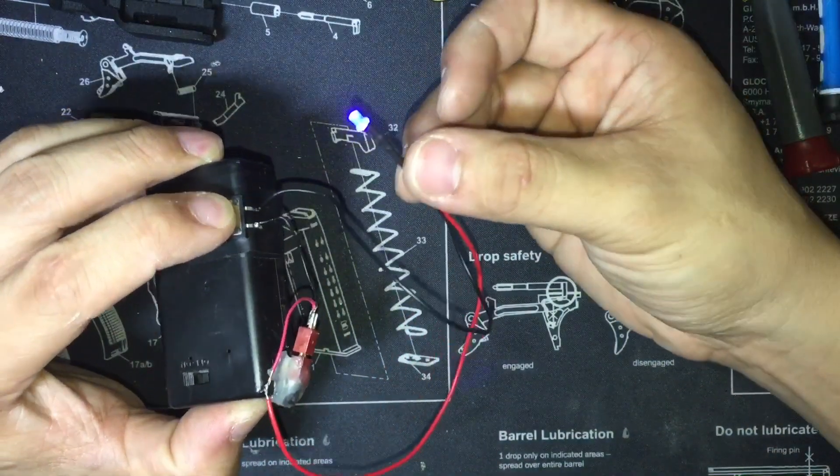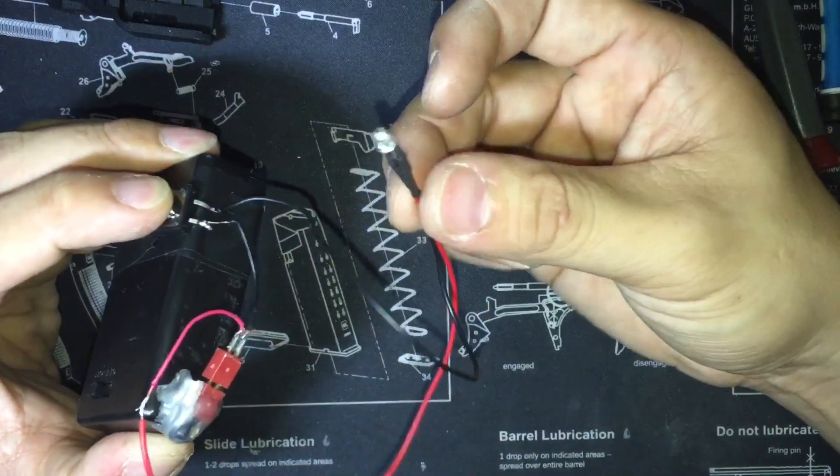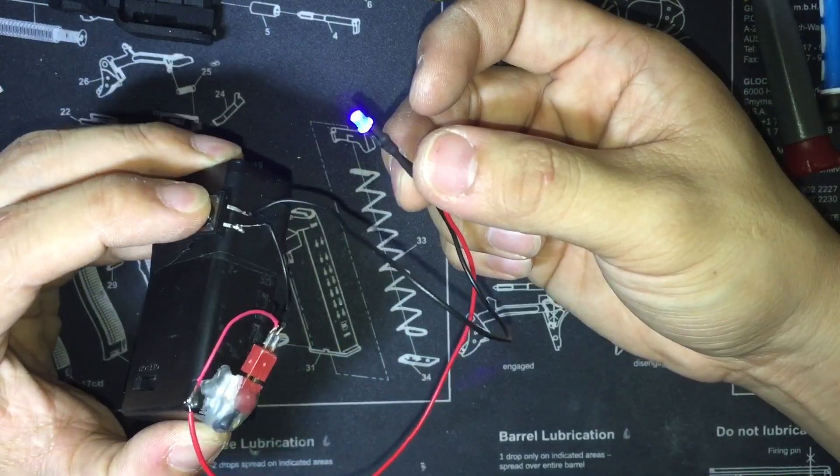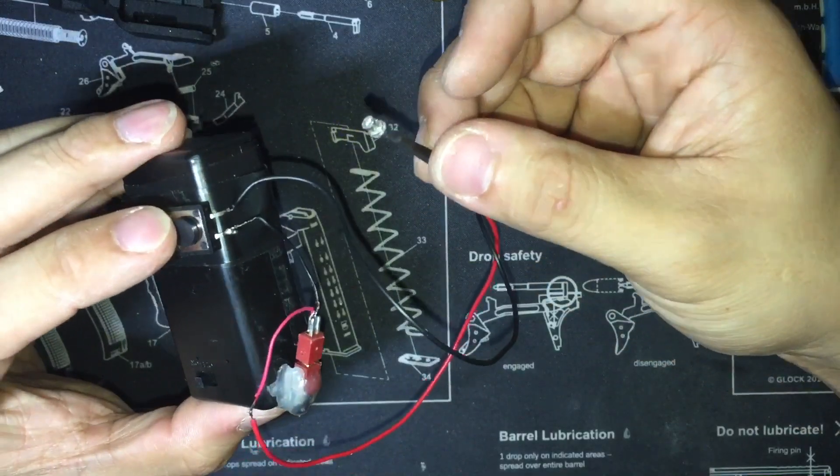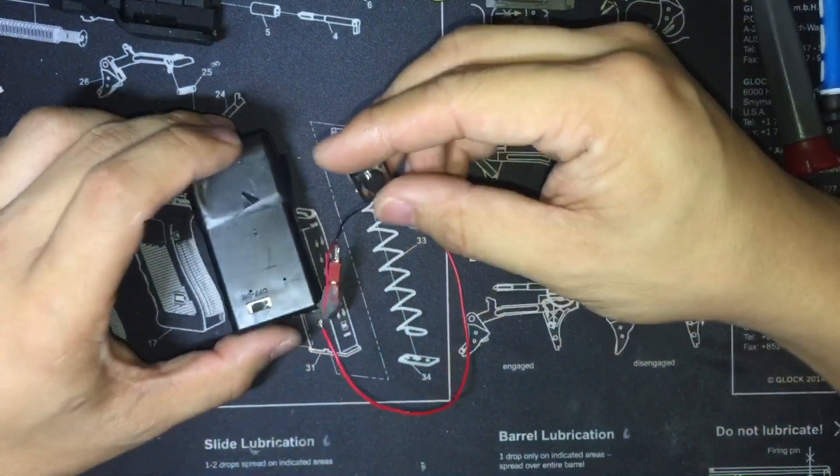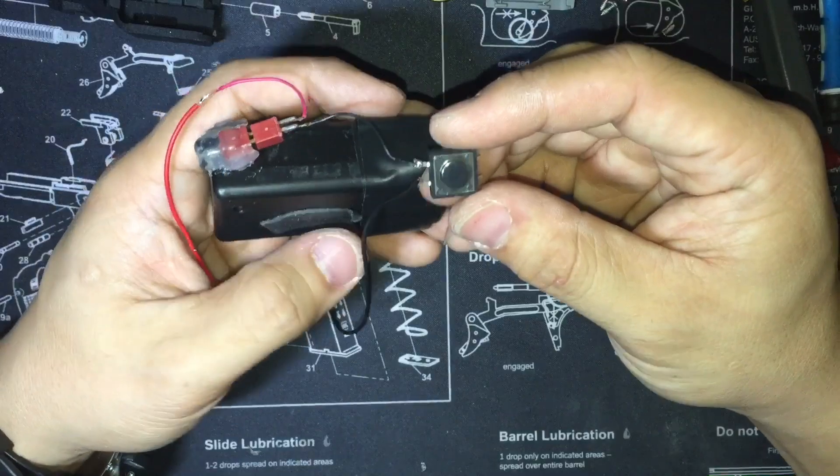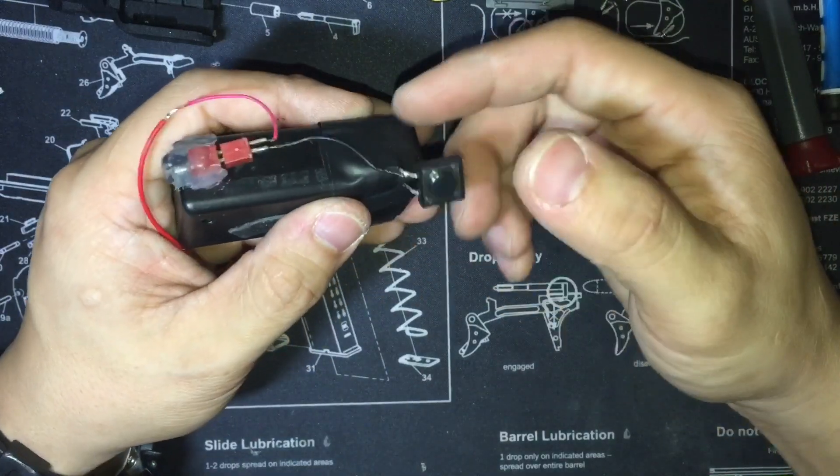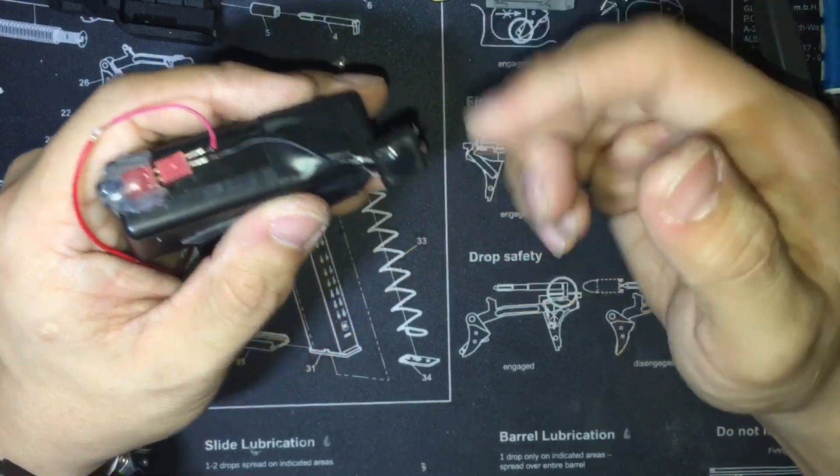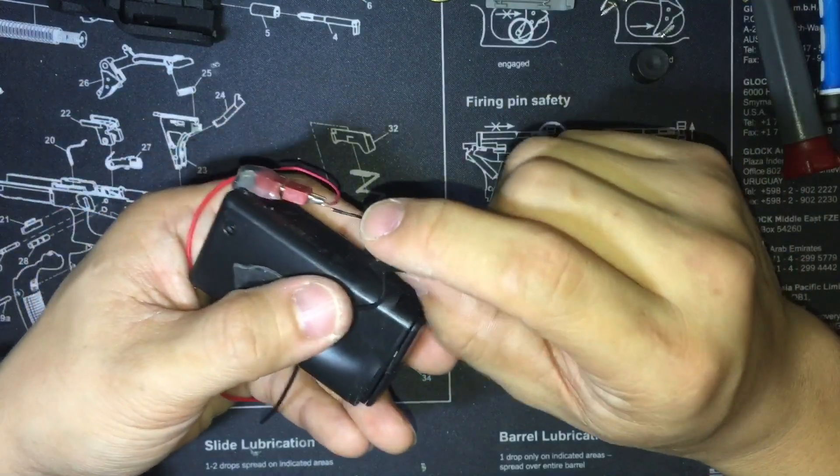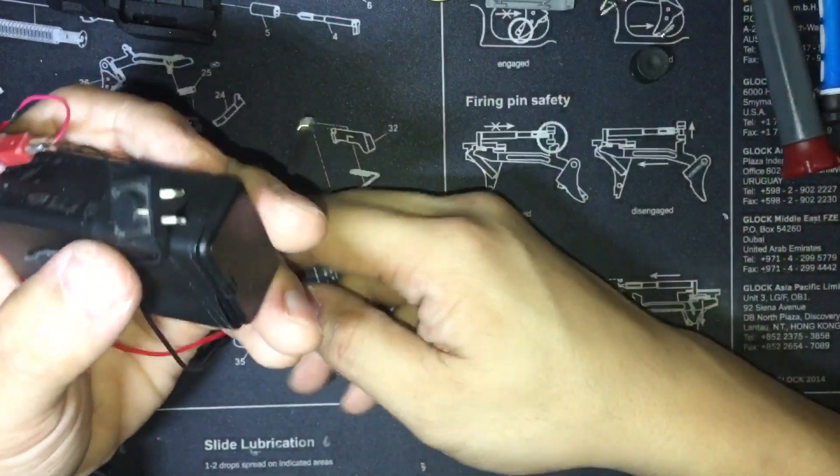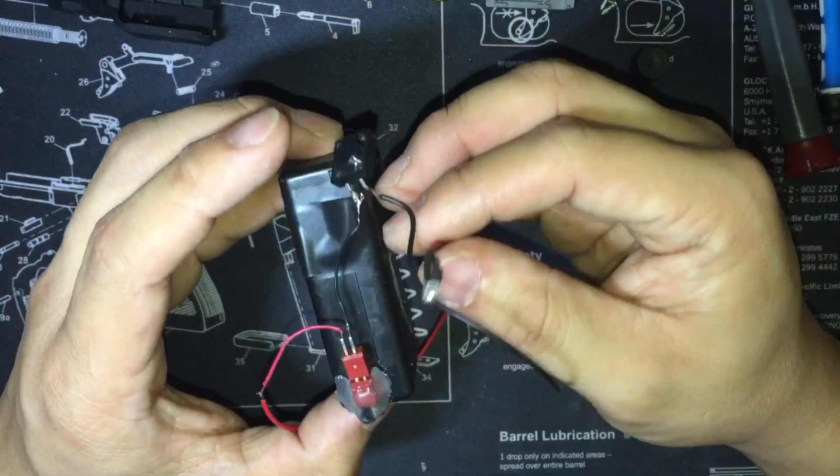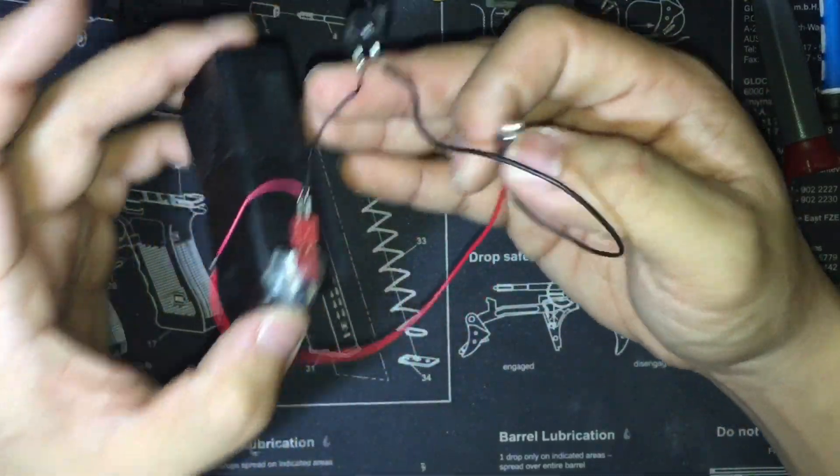So yeah, this is an LED. Imagine if it's a flashlight. And I might do something similar to this to my TLR and just have this attached somewhere around the trigger unit. So every time I pull the trigger, it fires the light and fires the gun.